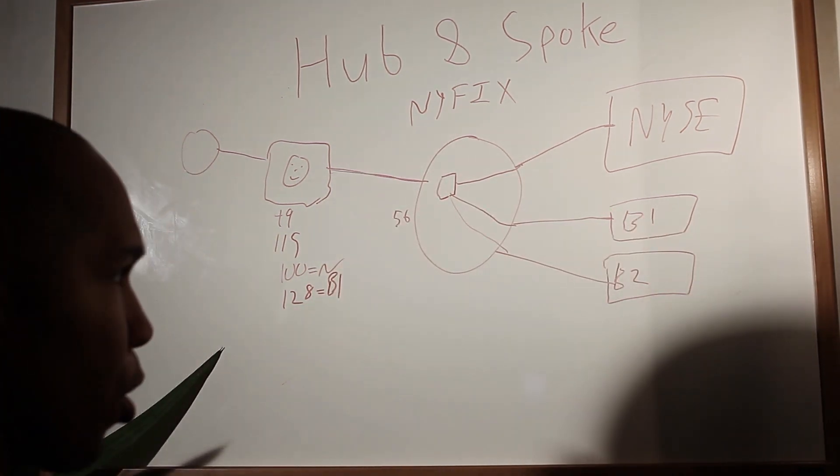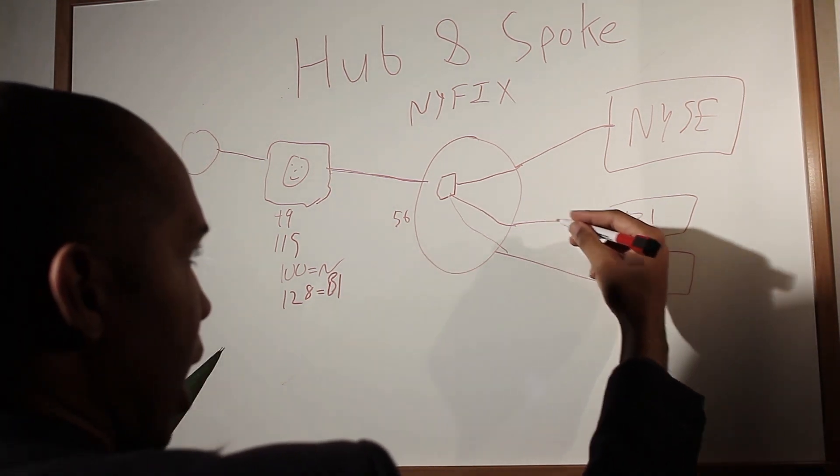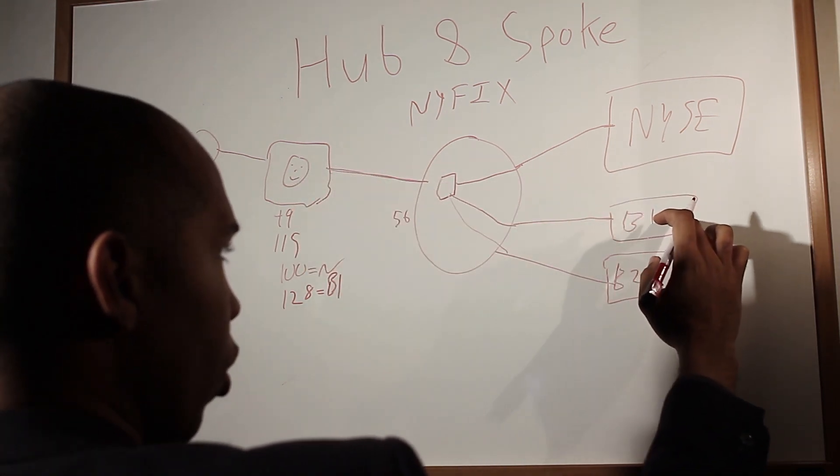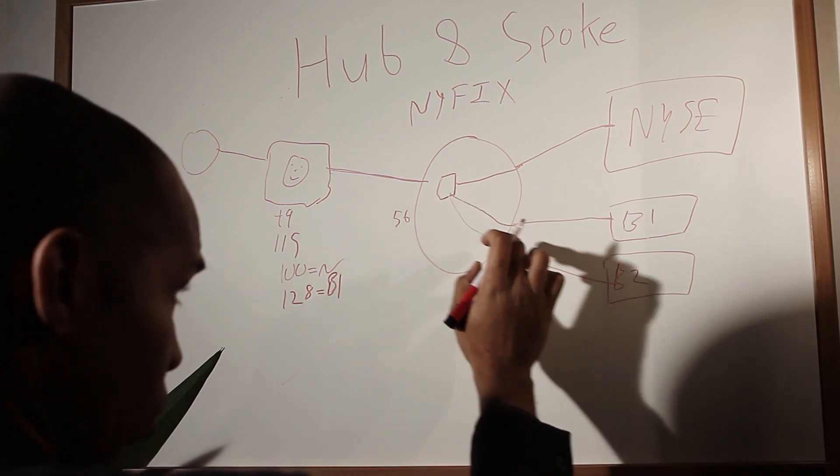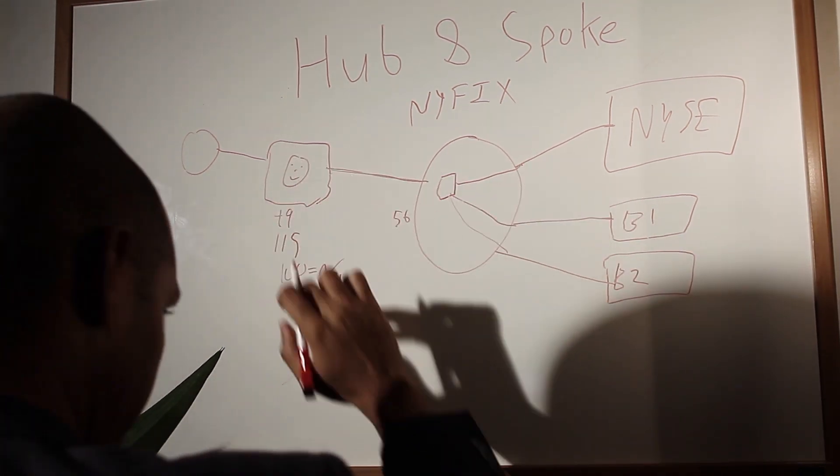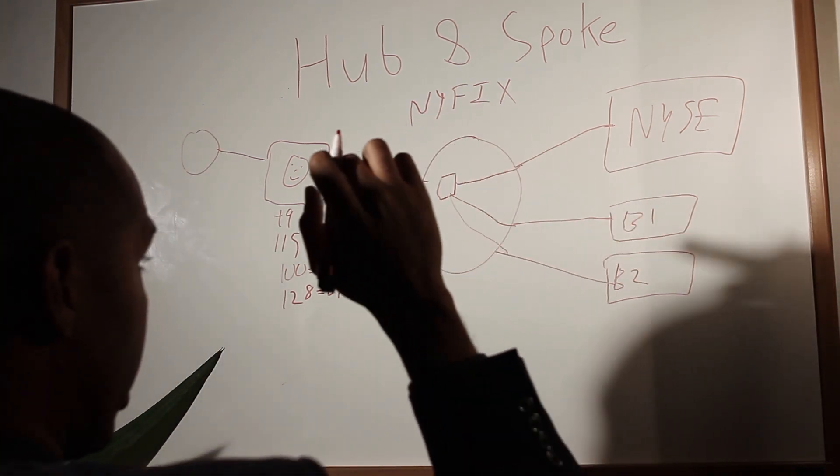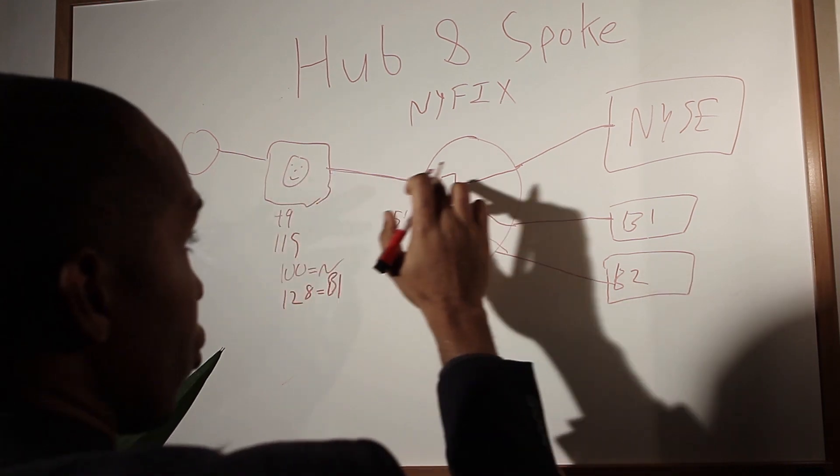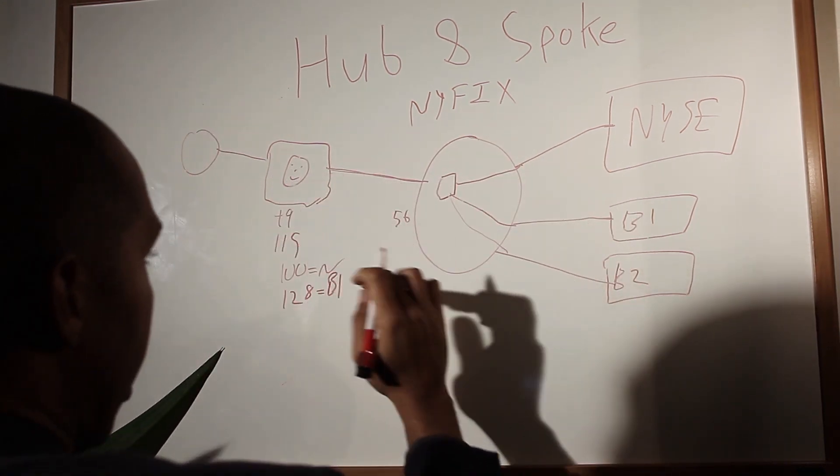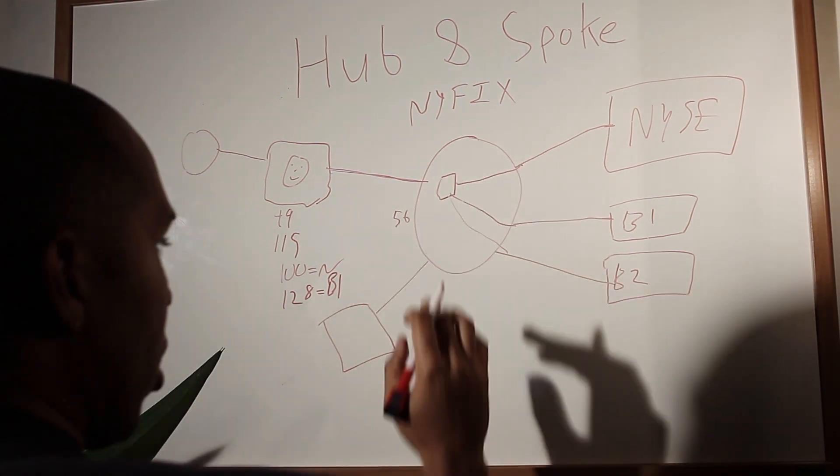So B1 gets my order, and they can process it back to me. So when they respond, they're going to respond in kind and say 128 equals me, whatever my comp ID is. So they have a connection, 49, 56 as well. But in their message, they're going to say 128 equals me. Order comes in, or the execution comes back in here, and it indicates a deliver to comp of me. So this hub network knows to route the order to me, as opposed to other clients that are also using the same hub network.